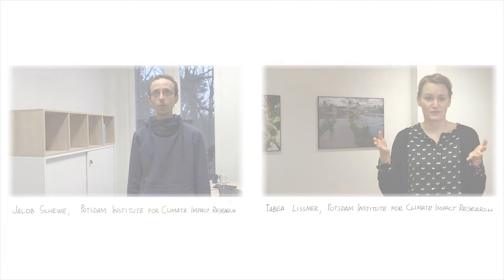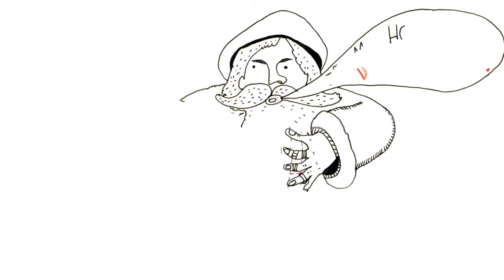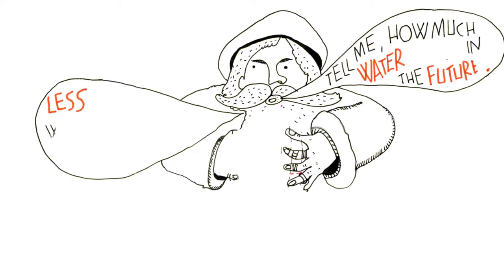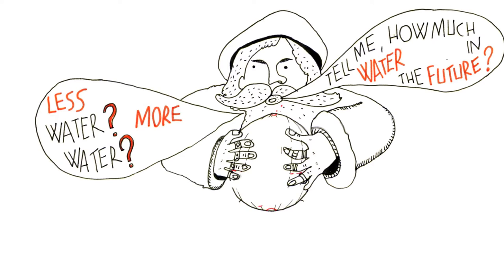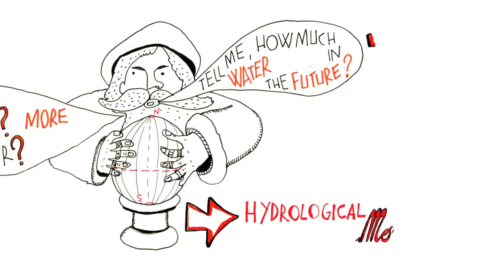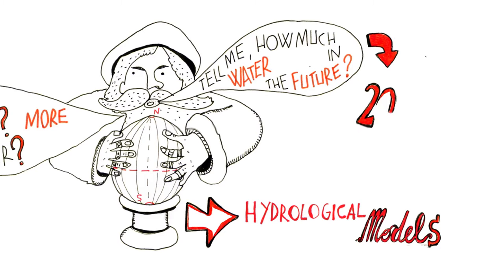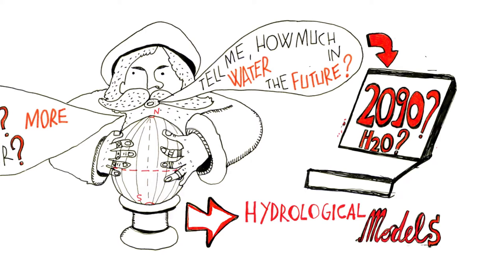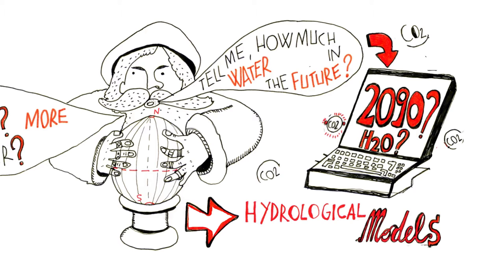The question is how water availability is going to change in the future — will there be less or more water available for humans in different places on the planet? To find that out, people are using water models, hydrological models, to simulate the hydrological cycle on Earth, depending on changes in the atmosphere which come from climate models.